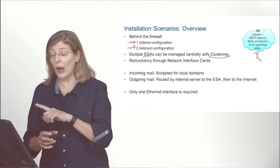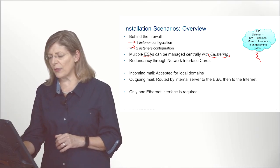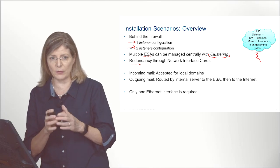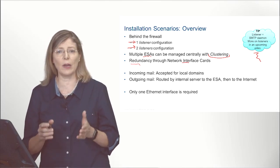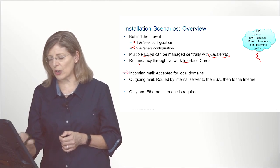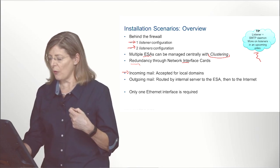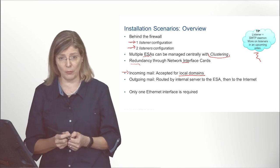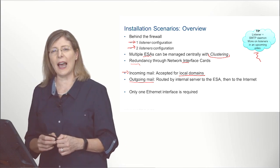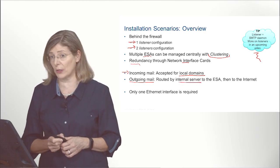We will have a full recording just on clustering later on. If you need redundancy, that can be done on one box — one physical box — with paired network interface cards. We will need to make sure that our ESA is accepting incoming mail for the local domain we are responsible for, and we will also make sure that to send out email we will be routing outbound email coming from our internal mail server.